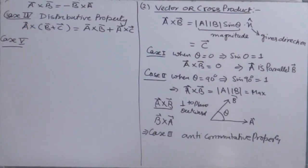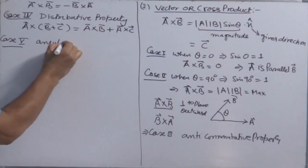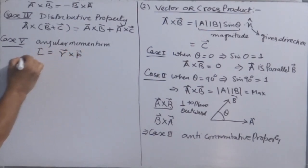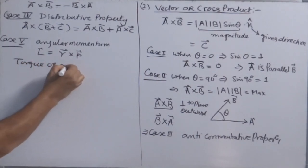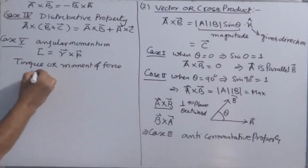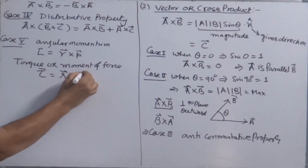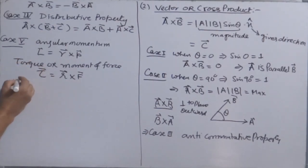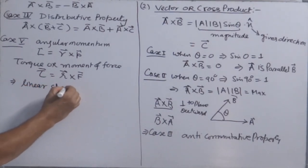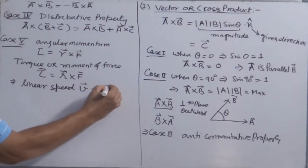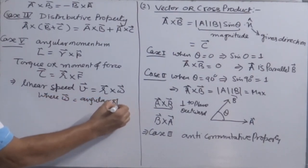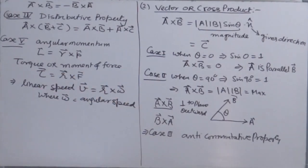There are many quantities in physics where we use the cross product. For example, calculating angular momentum: L is equal to R cross P. Torque, or moment of force: torque is equal to R cross F — remember you cannot write this as F cross R, because that would give the torque vector in the opposite direction. Another example is linear speed: V is equal to R cross omega, where omega is the angular speed of the moving particle.